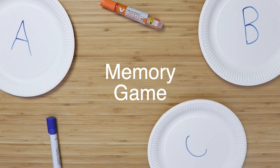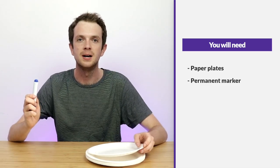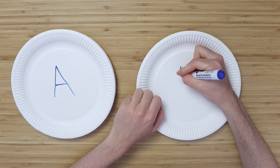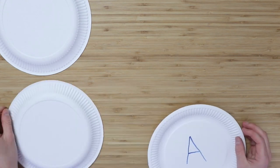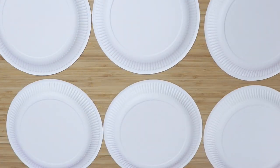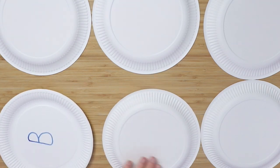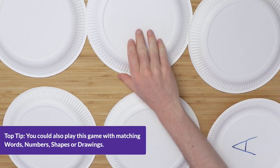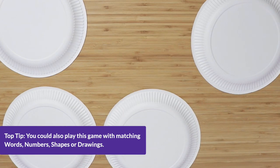First up, an activity called the memory game. What you'll need for this one is paper plates and a permanent marker. Write down on different plates matching pairs of letters, then spread these plates over the table turned over so that the children can't see what's written on them. They take it in turns to turn over a plate to see what the letter is. The aim is to find matching pairs, and when they do, they get to keep the plates till the end. This helps with their turn taking, social interaction, attention and listening.